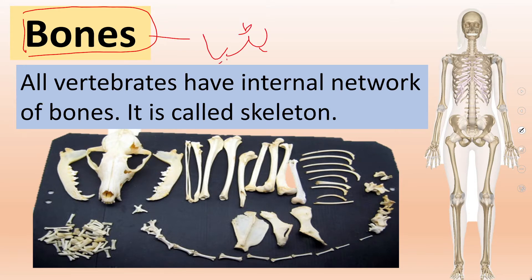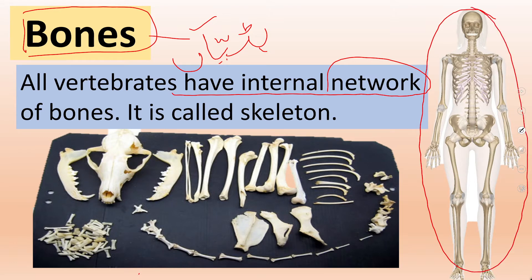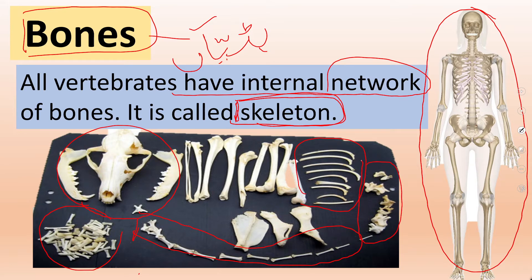Next is bones. We have previously studied vertebrates and invertebrates, including a little about the skeleton and bone structure. All vertebrates have bones and an internal network of bones. Look at the picture — this is a complete network of bones, a full structure inside your body that is well shaped and balanced. This complete structure of bones present inside our body is called the skeleton. Bones are present in all vertebrates and they make up a complete network called the skeleton.